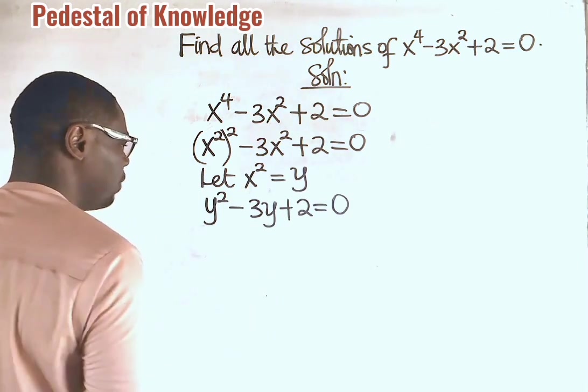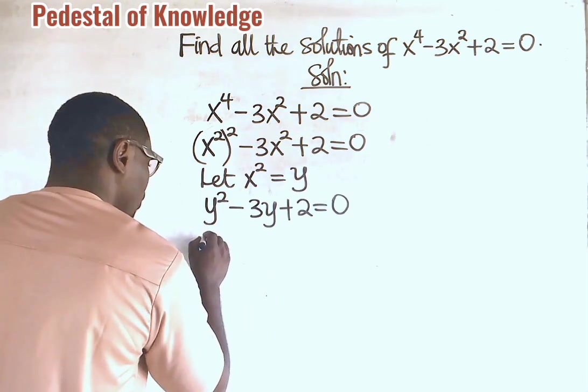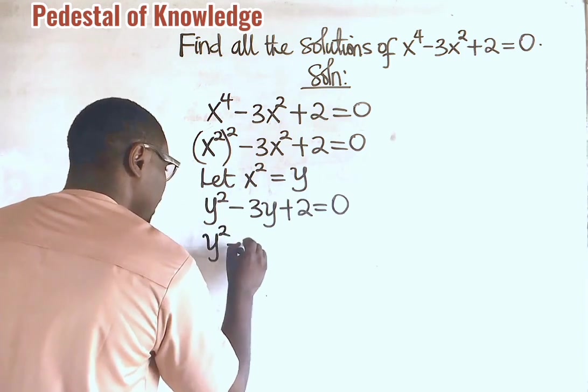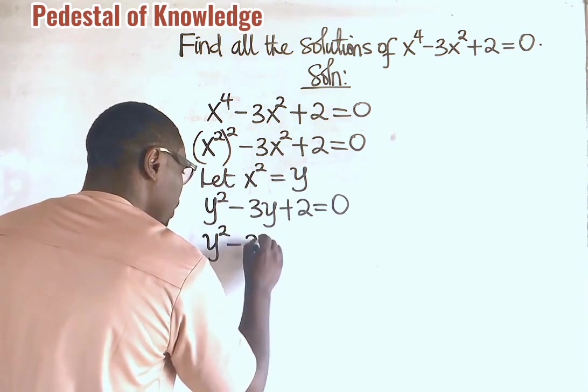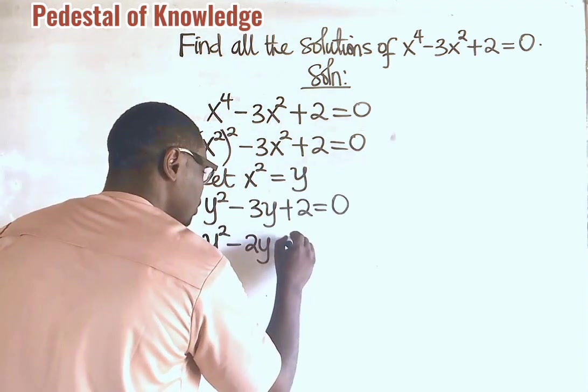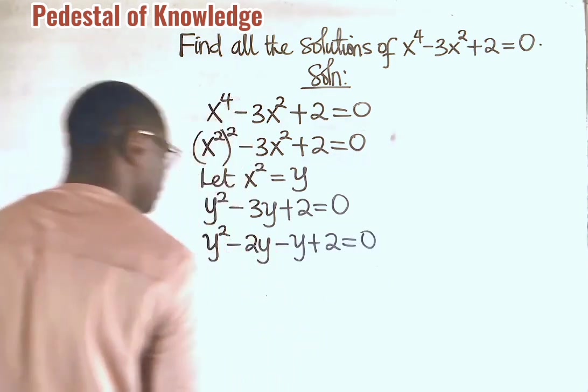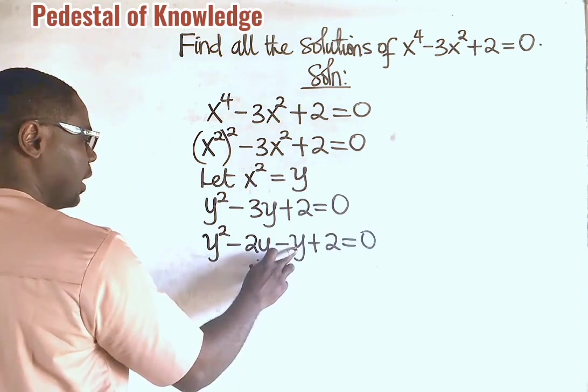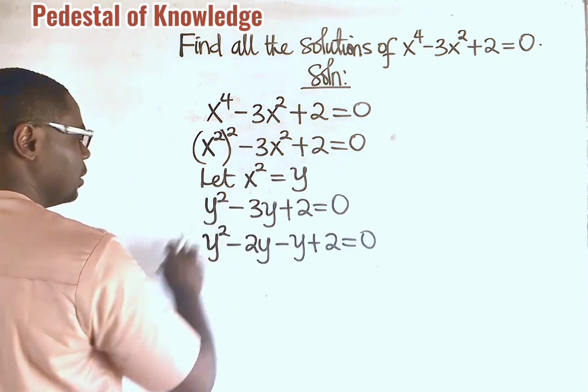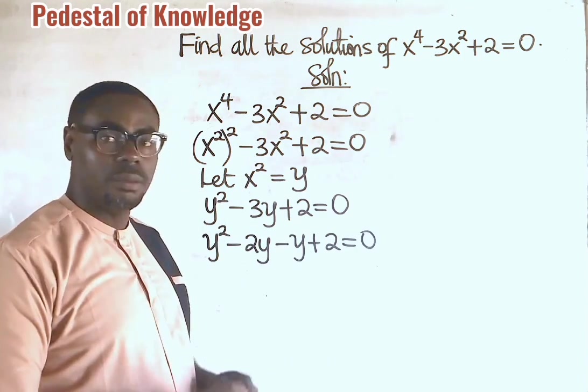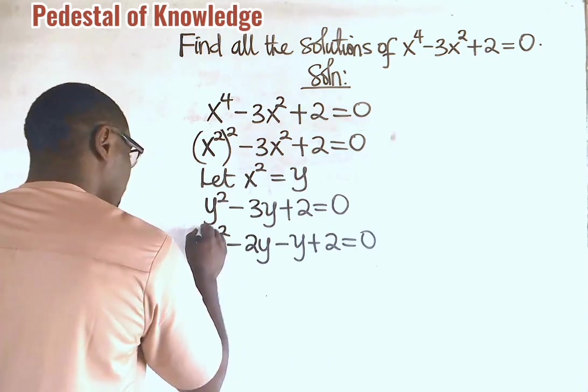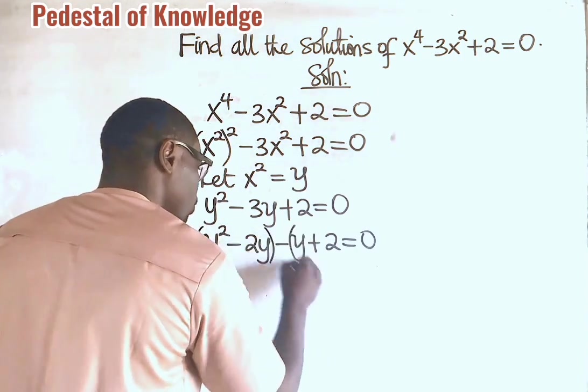From here, using factorization method, we are going to have y squared minus 2y minus y plus 2 is equal to 0. Because minus 2y minus y will give us minus 3y. That is the modus operandi in factorization method. Now, we now group it in twos.